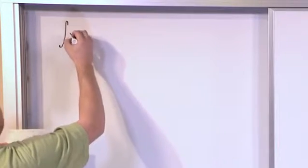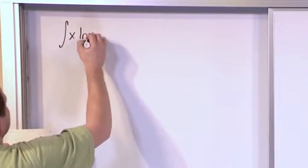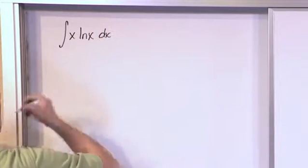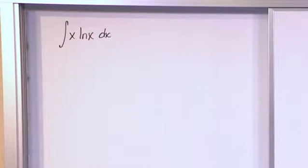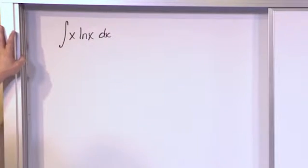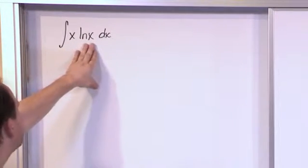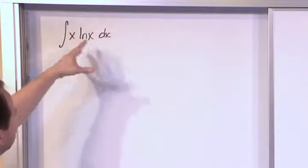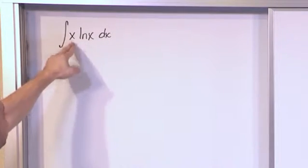So here's an integral of x times natural log of x dx. And the question is, if you didn't have integration by parts, how would you do this? Well, you would try to pick something to cancel, but if you choose u equal to ln x and you take the derivative and put it back in there, you'll find out that you do not cancel x.